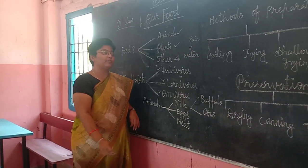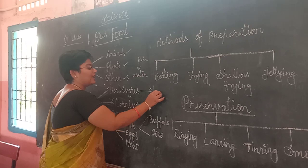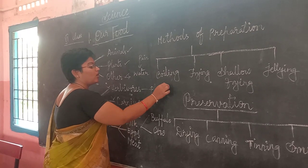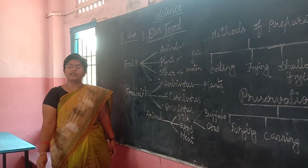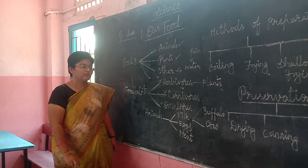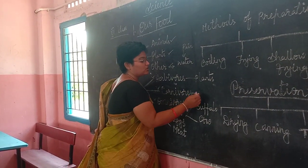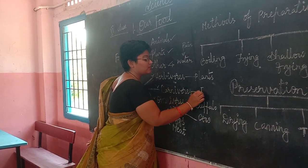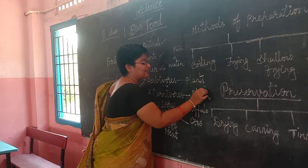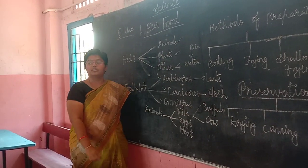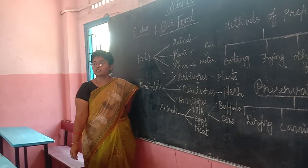What are herbivores? Herbivores are nothing but organisms which depend only on plants as their food. Then what are carnivores? Carnivores are organisms which eat the flesh of other animals as their food.